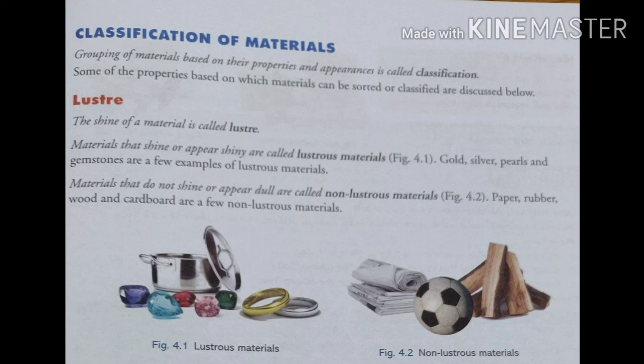Whenever we classify something, or make groups, or arrange our materials properly in groups — if we classify properly — some of the properties based on which materials can be sorted and classified are discussed below. Now we will study which properties we can classify materials on. The first one is lustre.